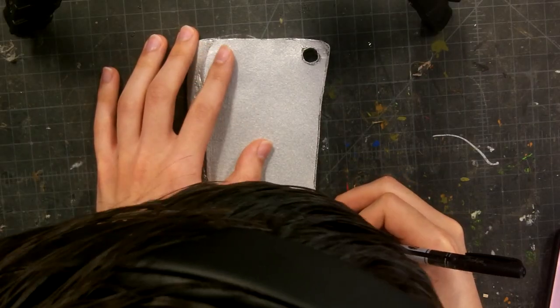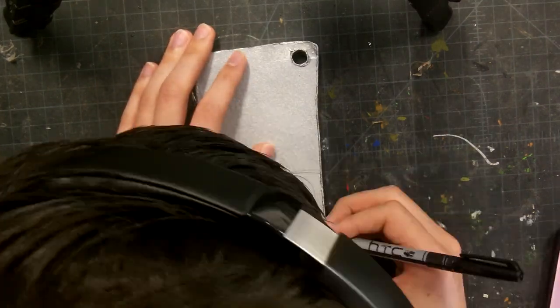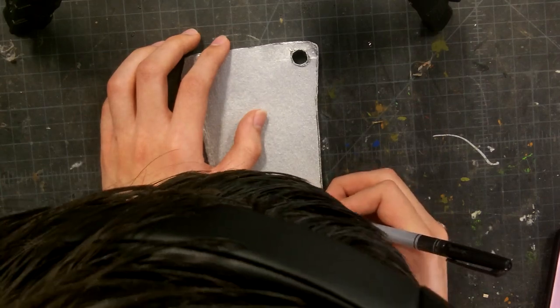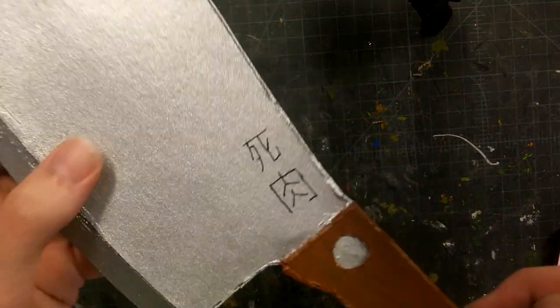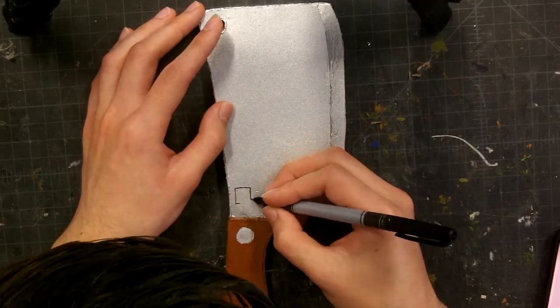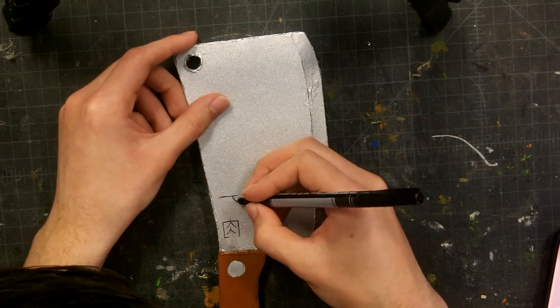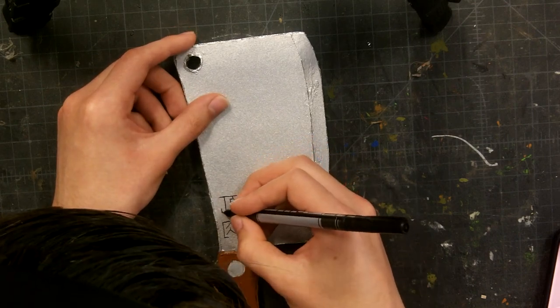Then I drew on the Chinese characters onto the blade with a fine point marker. I would recommend putting a layer of Mod Podge over it so the marker doesn't smudge. Because if you don't do that it will smudge and then you'll have to redo it which is annoying.